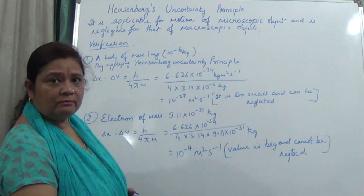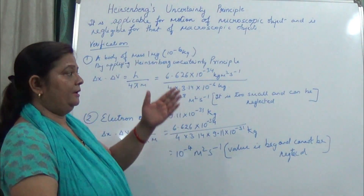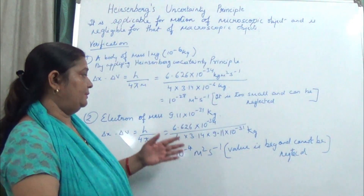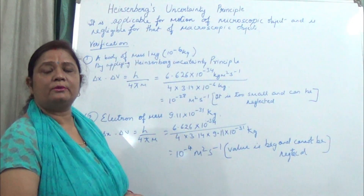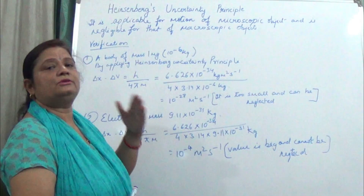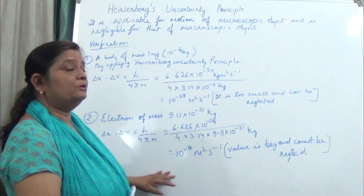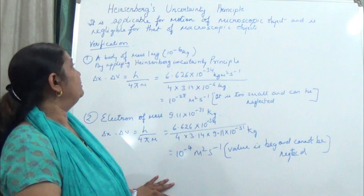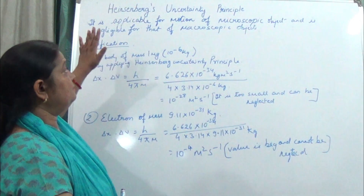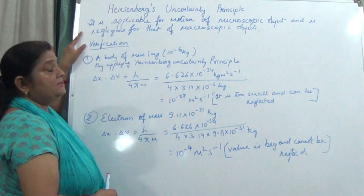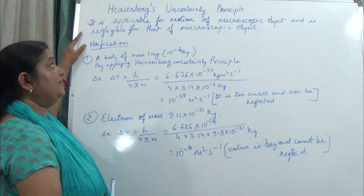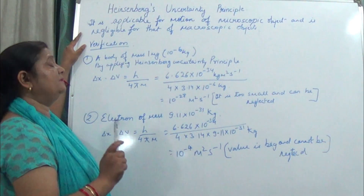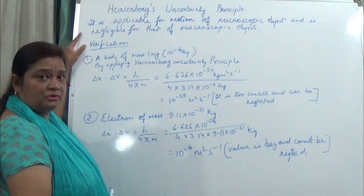If we are talking about the electron — if a certain wavelength of light is incident on that electron, it displaces a lot and goes to an unpredictable position. So Heisenberg's uncertainty principle is applicable for the motion of microscopic objects and is negligible for macroscopic objects.